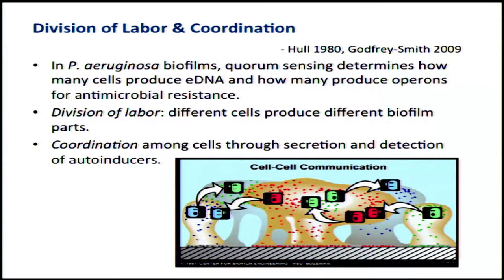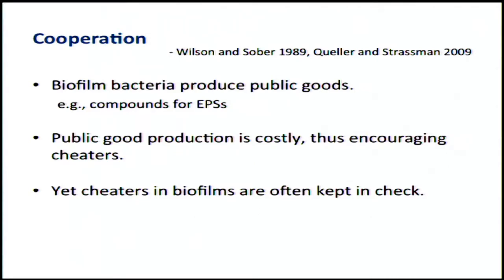Another criterion people use is division of labor and coordination as something that makes for an evolutionary individual. Going back to Pseudomonas aeruginosa and quorum sensing, there's division of labor — different cells producing different parts of the biofilm — and coordination among them. Autoinducers released by bacteria allow other bacteria of the same type to sense concentrations and either tamp down or increase their production for the biofilm. Philosophers are cautious about cooperation, but arguably there's cooperation going on in these biofilms as well.